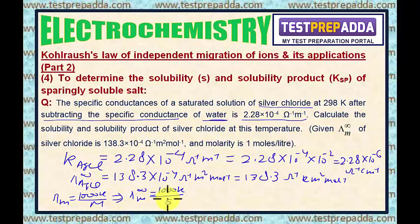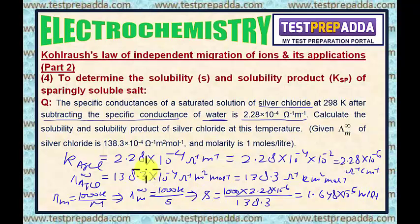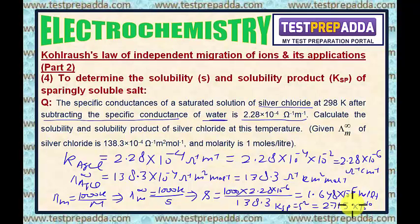So solubility S = 1000K / λM∞ = (1000 × 2.28 × 10⁻⁶) / 138.3 = 1.648 × 10⁻⁵ mol/L. Since AgCl is AB type salt, KSP = S². Squaring the solubility: KSP = 2.715 × 10⁻¹⁰. This is the solubility product of AgCl and this is its solubility.